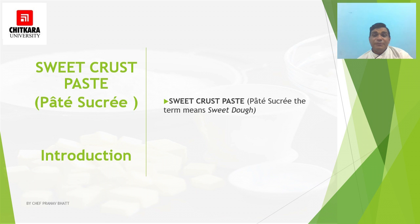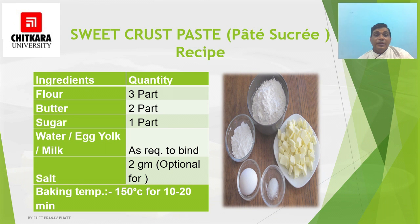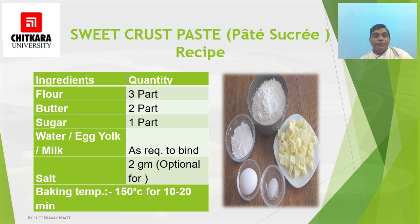The recipe for sweet crust paste uses flour at 3 parts, butter at 2 parts, sugar at 1 part, with milk, egg yolk, or water added if required, and salt is optional at 2 grams. It is baked at 150°C for 10 to 20 minutes, depending on the product.